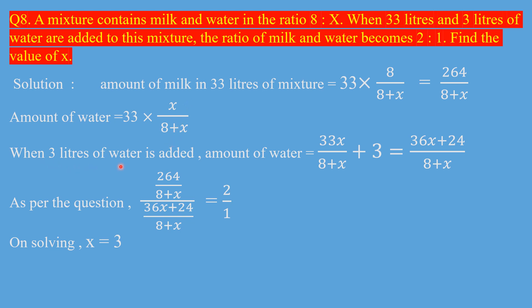Now, when 3 liters of water is added to this mixture, the amount of water will be the old amount plus 3. So you put 33x upon 8 plus x, which is the old amount of water, plus 3 liters. When you solve this, you will get 36x plus 24 upon 8 plus x.